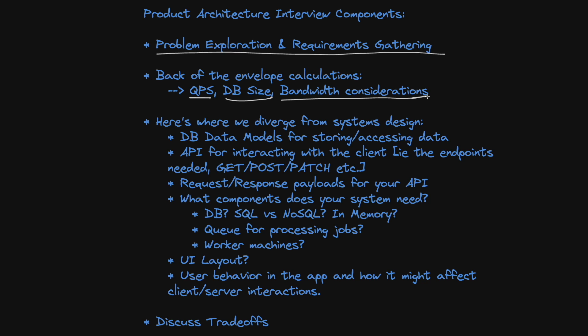Now here's where we start to diverge a bit from system design. The first thing you want to do is define your data models for storing and accessing data. You don't have to go really in-depth — for example, setting up IDs for your database in a way that stores both the ID and timestamps for efficient retrieval is not really a consideration here. You still want to define all the data models: user model, post model, photo model, and how they all tie together — but you don't need to go super in-depth defining all the metadata for each model. It's more just: these are the basic models, this is how they tie into each other, this will join here, that will join that.